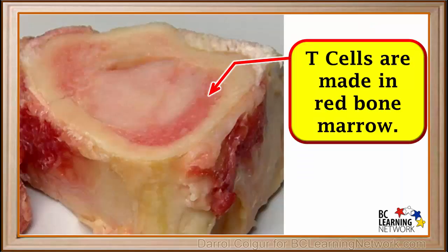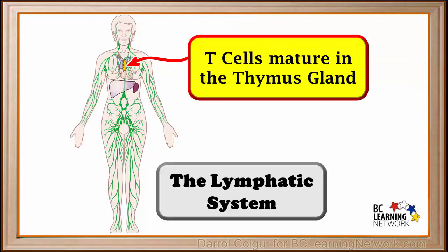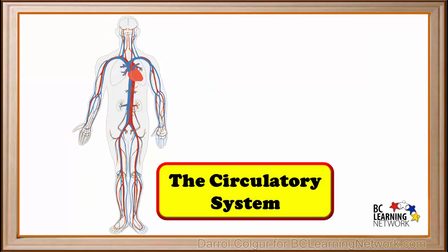Like all blood cells, T cells are made in red bone marrow. But T cells mature in the thymus gland, a little gland under the collarbone. That's where they get their name — T cells. The thymus gland is part of the lymphatic system, so T cells are found in the lymphatic system, but also in the circulatory system or bloodstream. They circulate through the whole body, scouting for cells that have been infected or cancer cells.